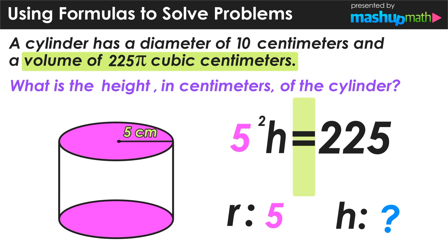So now we are left with 25 times the height is equal to 225 and remember we're solving for h here. We're trying to get h by itself and find out what value it represents.